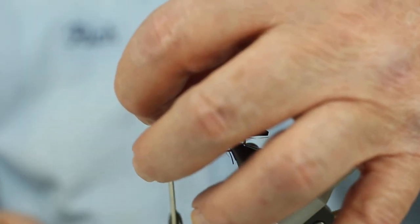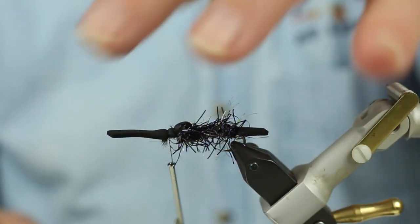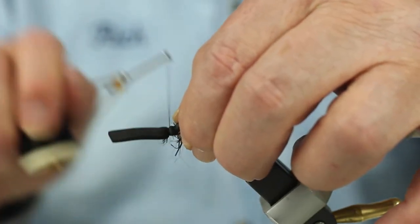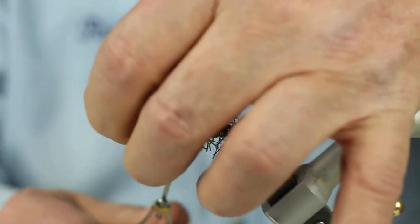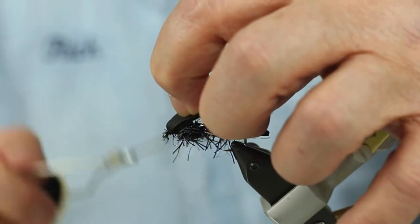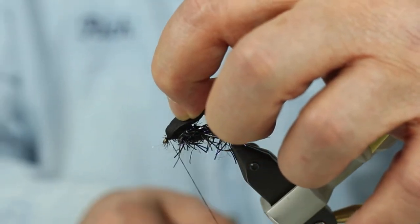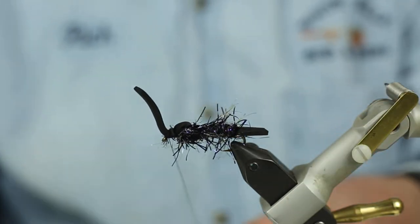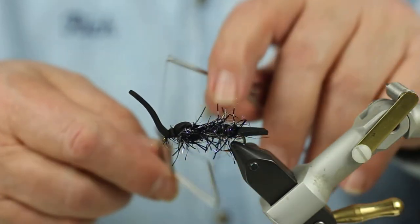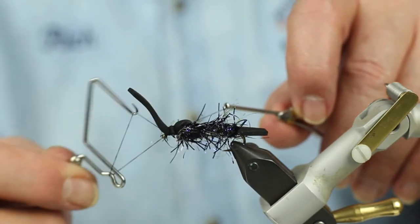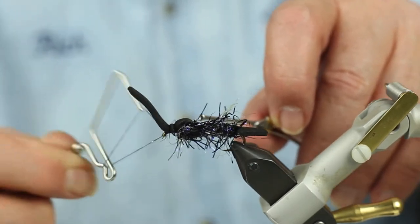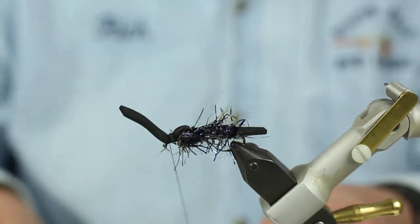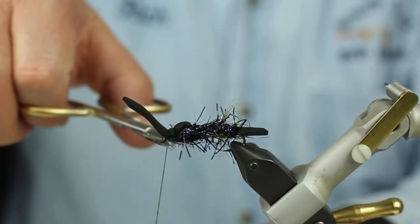But, I'm going to leave some excess here because I'm going to make pincers out of this. So, I'm tying this off and I can put my whip finish on right at this point. So, I brought my thread to the eye underneath the rubber, made my whip finish. I can cut my thread off.